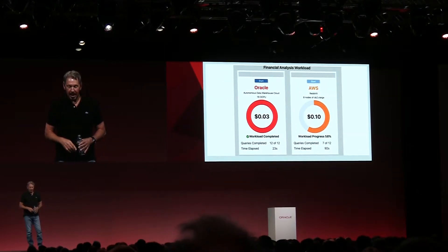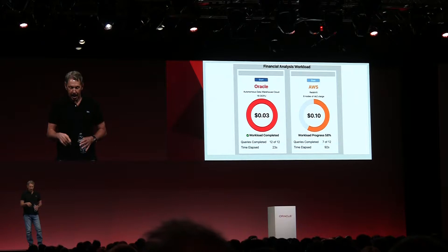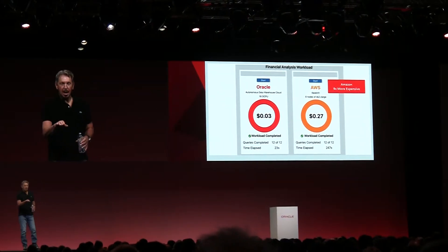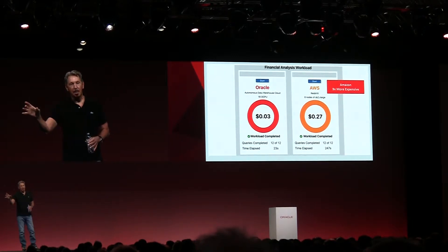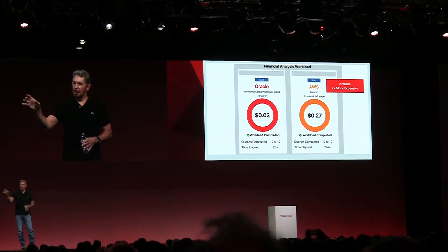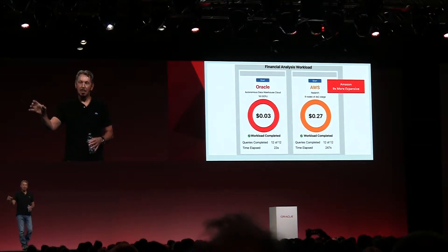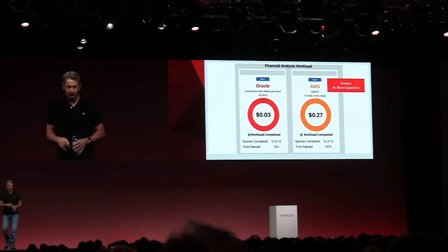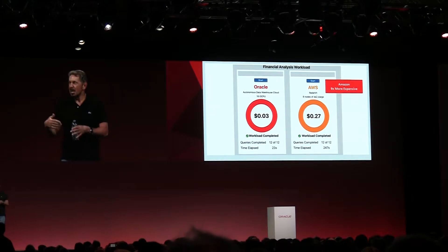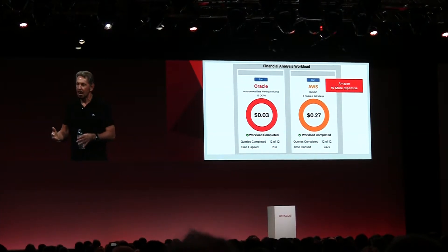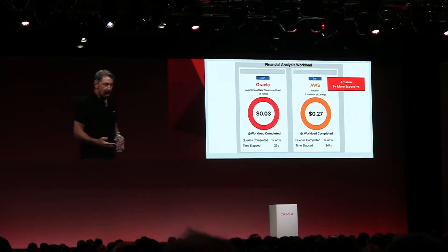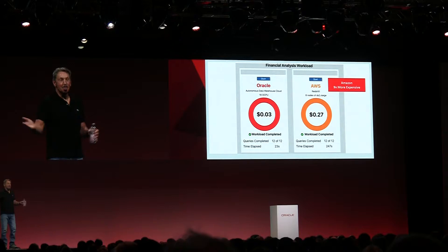After 23 seconds, we're done — Amazon's just getting started. In the financial analysis workload, this time they don't have the Oracle Database running at Amazon — this time they have their own Redshift database. Redshift took 247 seconds to do what we did in 23 seconds. It's a database specialized for fast query processing, but they're more than 10 times slower.